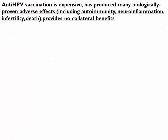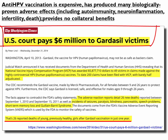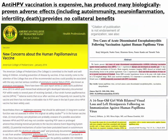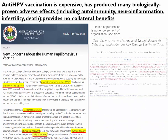One of the preventive measures for HPV viral infection-related illness is the anti-HPV vaccination. I consider that vaccination to be expensive, and the data has shown quite conclusively that this vaccination can produce many biologically proven adverse effects, including autoimmunity, neuroinflammation, infertility, and death. It really doesn't provide any collateral benefits. There are concerns about premature ovarian failure and premature menopause, related to the aluminum adjuvant, which has been shown to cause ovarian toxicity, especially when combined with another vaccine component, polysorbate 80.